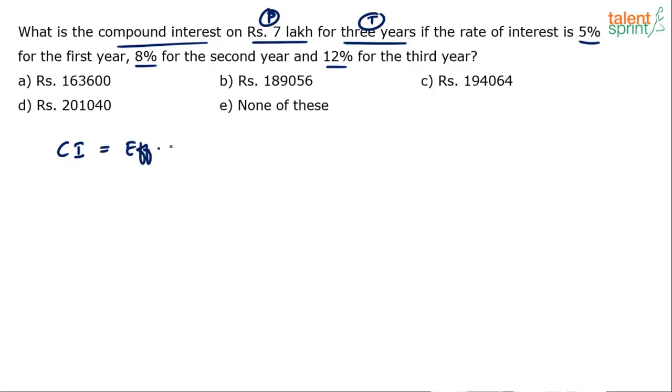Compound interest here is going to be the effective percentage of all the three values. What are the three values? 5, 8 and 12. Do the effective percentage calculation. That percentage on the principal amount will give you the answer. You know what is effective percentage. Effective percentage is equal to A plus B plus AB by 100.